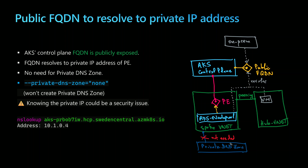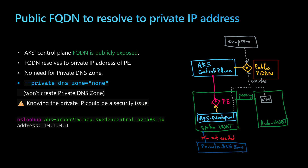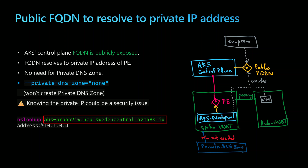Let's start with the easiest solution, which is a decentralized solution that relies on the public FQDN of the AKS cluster. When we create a private endpoint, a private DNS zone will be created by default in order to resolve access to that private endpoint. But there is an option where you can set it to none, meaning no private DNS zone is created. In that case, resolution to the private endpoint IP address can be done through the public FQDN of the AKS control plane, which is enabled by default.